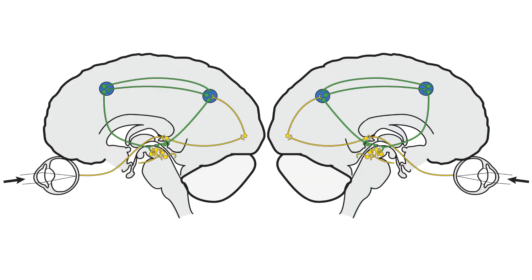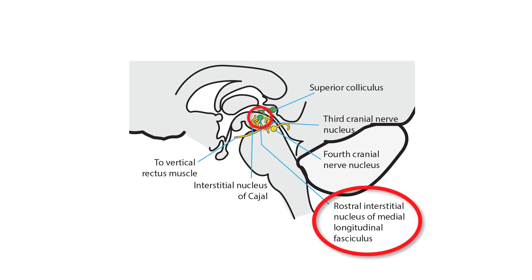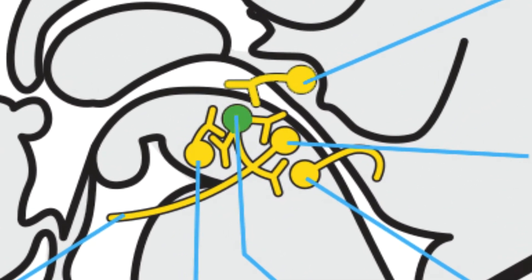The signal then travels from both cerebral hemispheres down to the superior colliculus in the midbrain, and then on to the rostral interstitial nucleus of the medial longitudinal fasciculus — we will abbreviate that to RIMLF.